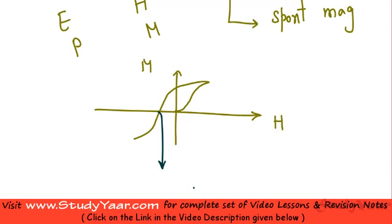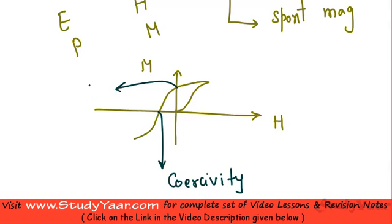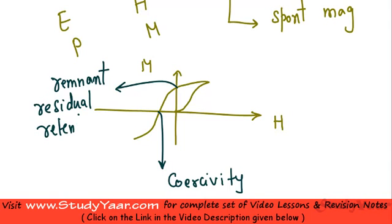Similar to this concept, we define a term known as coercivity. Coercivity determines the amount of magnetic field that needs to be applied for your magnetism to become zero. Also note that even at zero magnetic field, there is a remanent magnetization, which is known as remanent magnetization, or residual magnetization, or retentive magnetization.